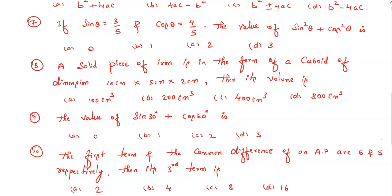Question number eight: a solid piece of iron is in the form of a cuboid of dimension 10 cm × 5 cm × 2 cm, then its volume is—among these four options select the correct answer. Question number nine: the value of sin 30° + cos 60° is—select the correct answer.